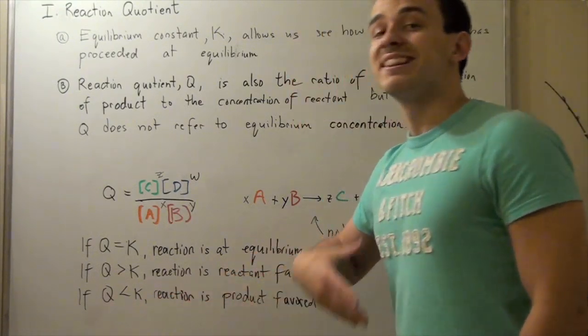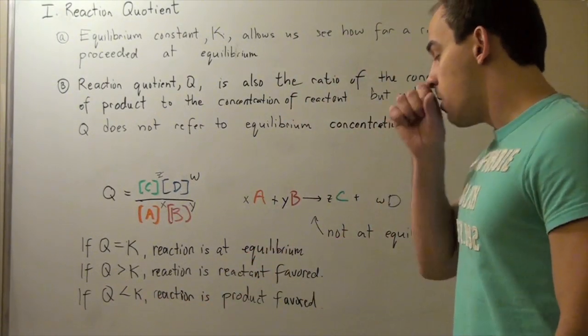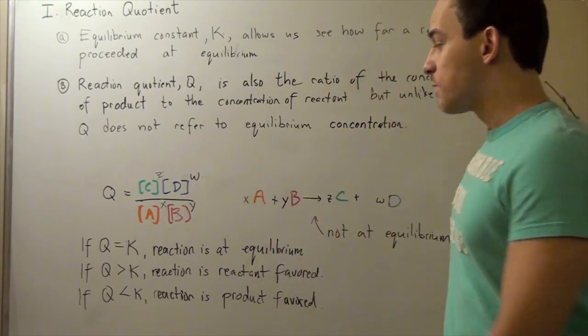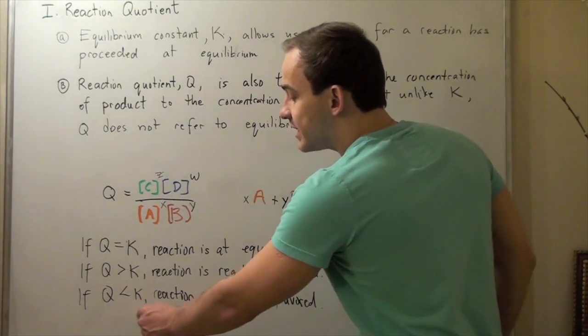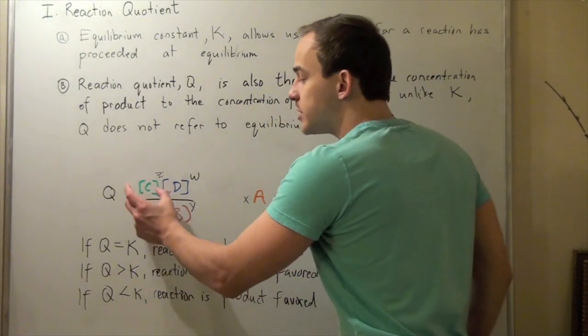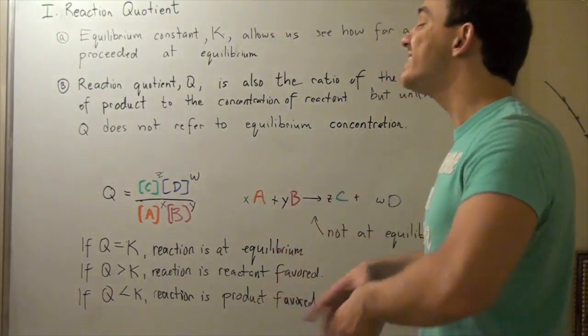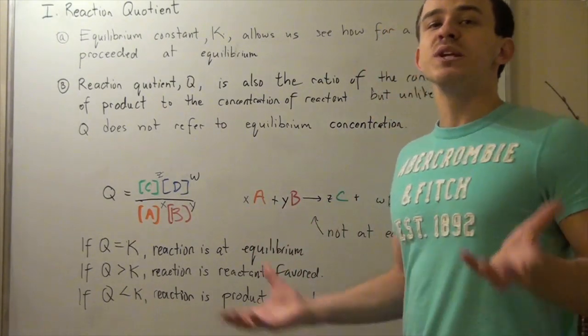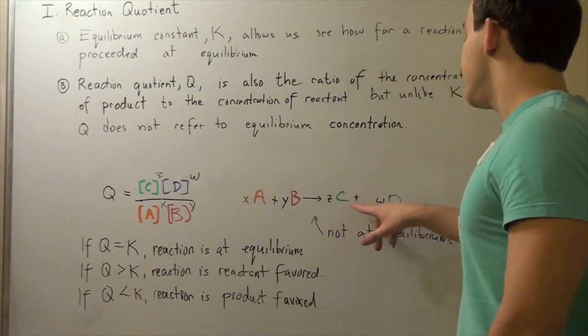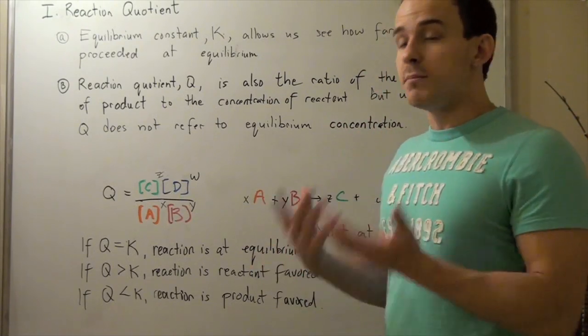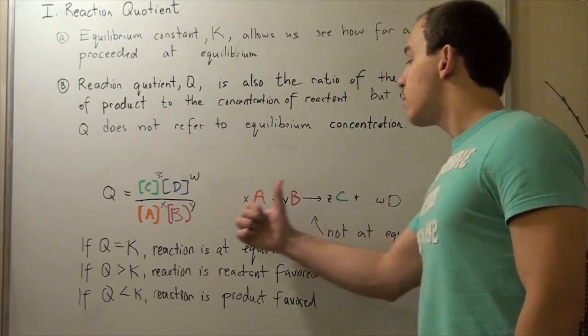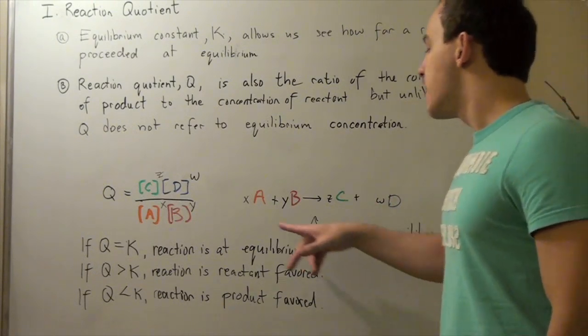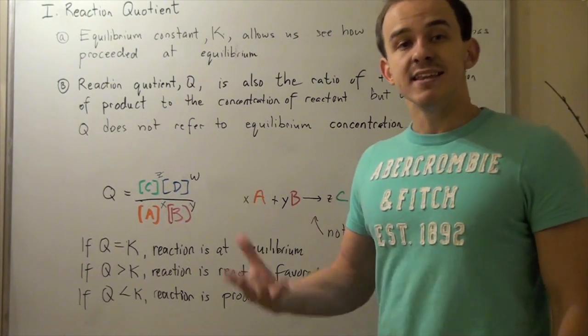Now, if Q is less than K, that means our reaction is product favored. So, let's go back to the ratio. Q being less than K means that our concentration of C and D, our products, is less than that at equilibrium. And what that means is A and B will tend to react to produce the C and D that is seen at equilibrium. And therefore, our forward reaction will be preferred over the reverse reaction. And so, this is called product favored reactions, or spontaneous reactions.